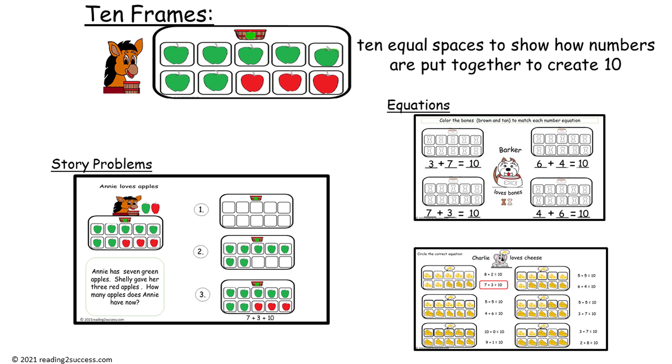In our first example of story problems, we have a story about Annie. Annie has seven green apples. Shelly gave her three red apples. How many apples does Annie have now?